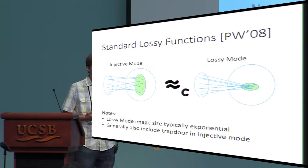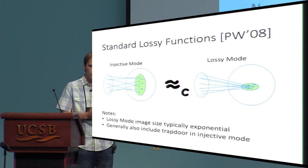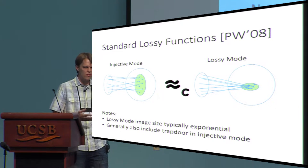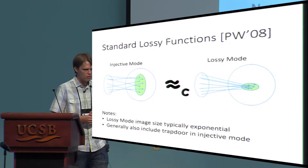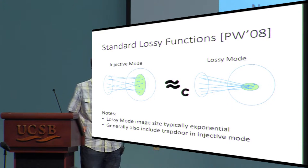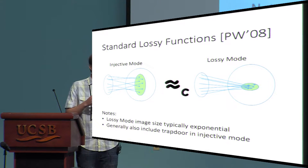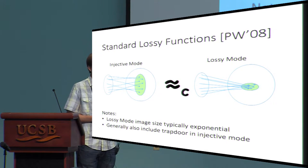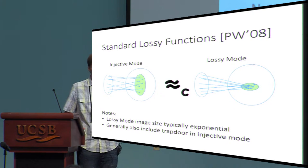A standard Lossy function comes in one of two flavors. There's an injective mode where the function is one-to-one with no collisions, and a lossy mode where the image size is much, much smaller than the domain size — there are many collisions, and the output necessarily loses information about the input. The security requirement for standard Lossy functions is that the injective mode and the lossy mode are computationally indistinguishable. In the lossy mode the image is still typically exponential in size, just a much smaller exponential. Standard Lossy functions also generally include trapdoors, though for this work we don't need any of them.